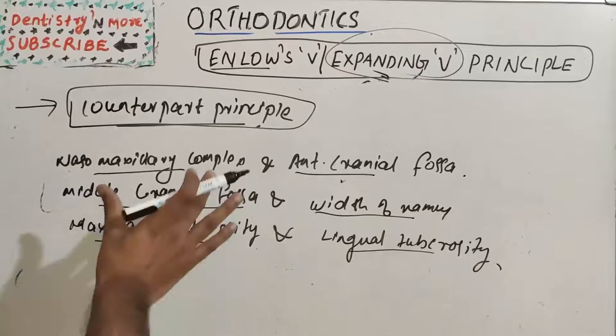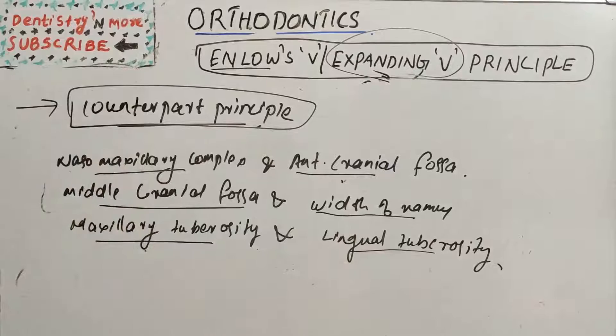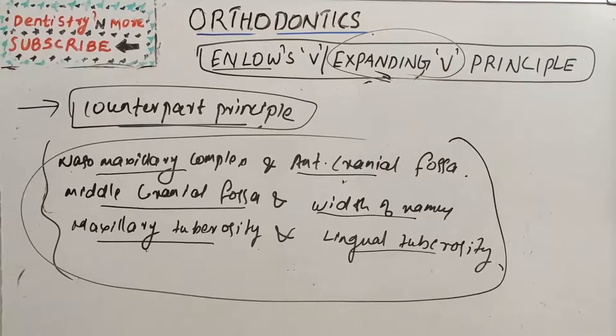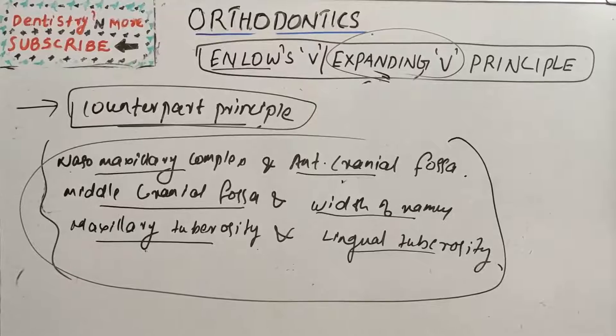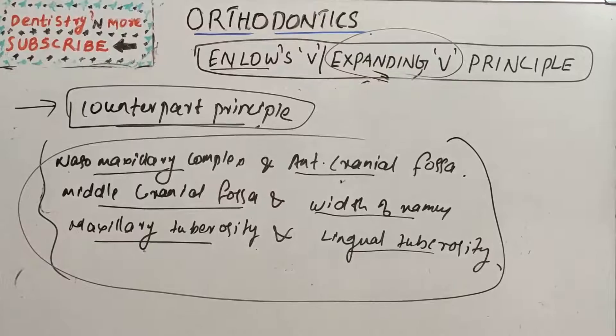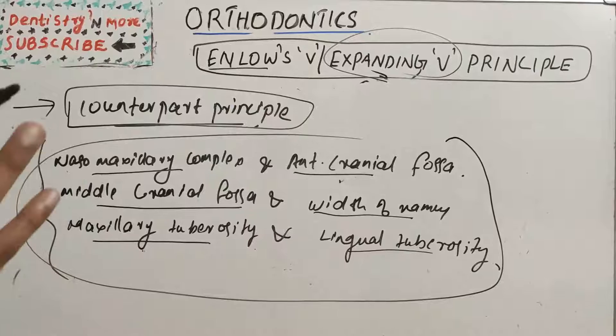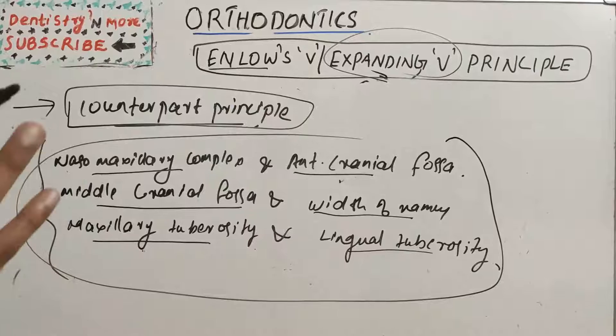Other counterpart examples include the middle cranial fossa and width of ramus, and maxillary tuberosity and lingual tuberosity. There will always be a balance, and to maintain this balance, growth happens on both bones simultaneously. However, this theory had many shortcomings and is rejected. So Enlow's expanding V principle is the accepted one. These are the two concepts put forward by Enlow: the expanding V principle and the counterpart principle.